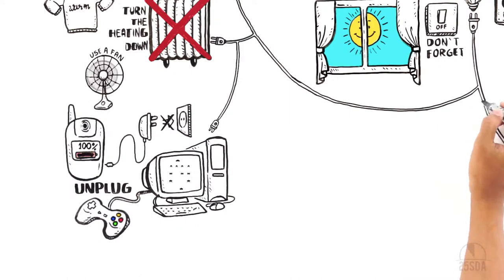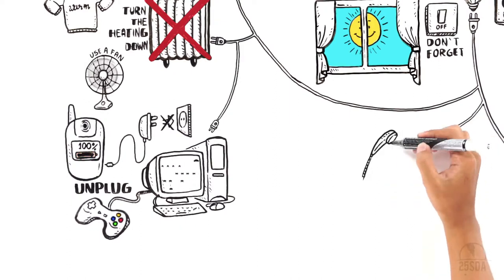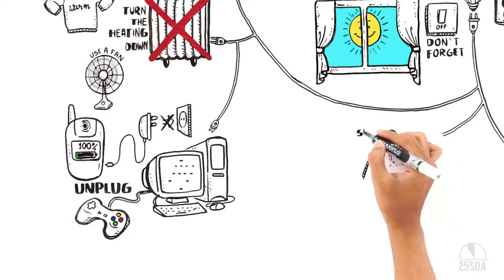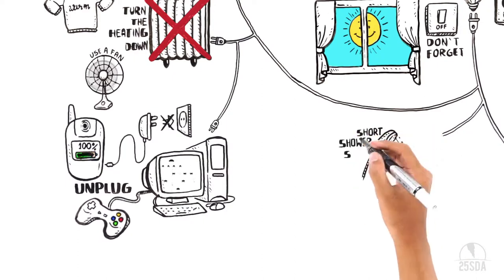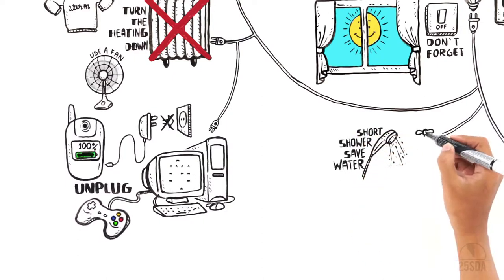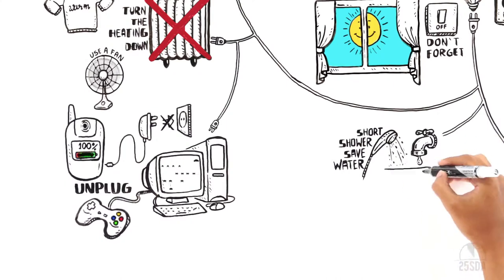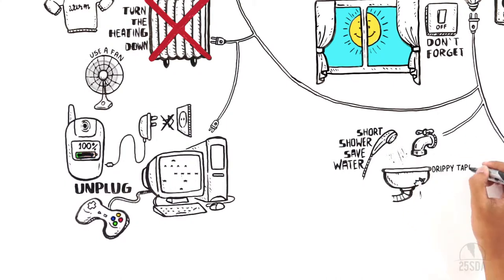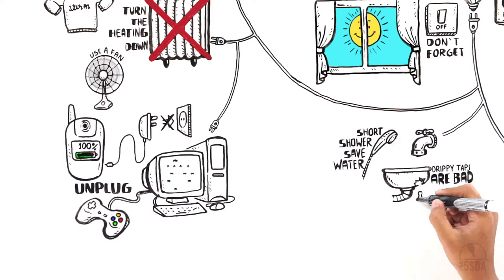Water is precious. Energy is needed to clean it, so how about saving a little? Instead of taking a bath, take shorter showers. Try not to keep the water running while you're brushing your teeth. Drippy taps waste a lot of water. Just think, a leaking tap wastes enough water to fill a soda bottle every 30 minutes.